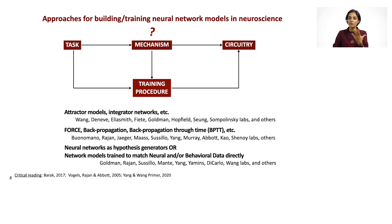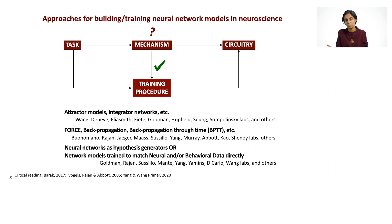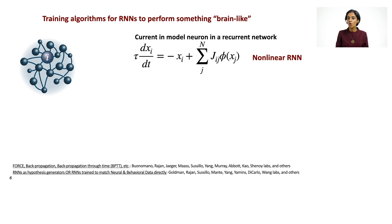Through different training procedures, we get networks to do these tasks and then hopefully reverse engineer them and try to understand how the biological circuitry might have accomplished the same. There are a few different categories of training procedures where this has been used profitably. We can also use neural network models as hypothesis test beds, to generate new hypotheses, or even train network models to match neural or behavioral data collected experimentally directly. People including those in my lab have used these types of approaches.